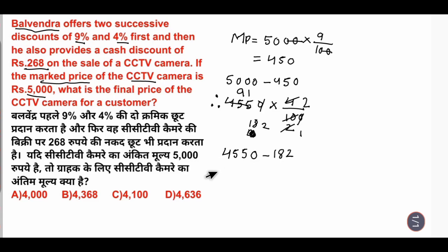How much will it be? Rs. 4,550 minus 182 equals Rs. 4,368.